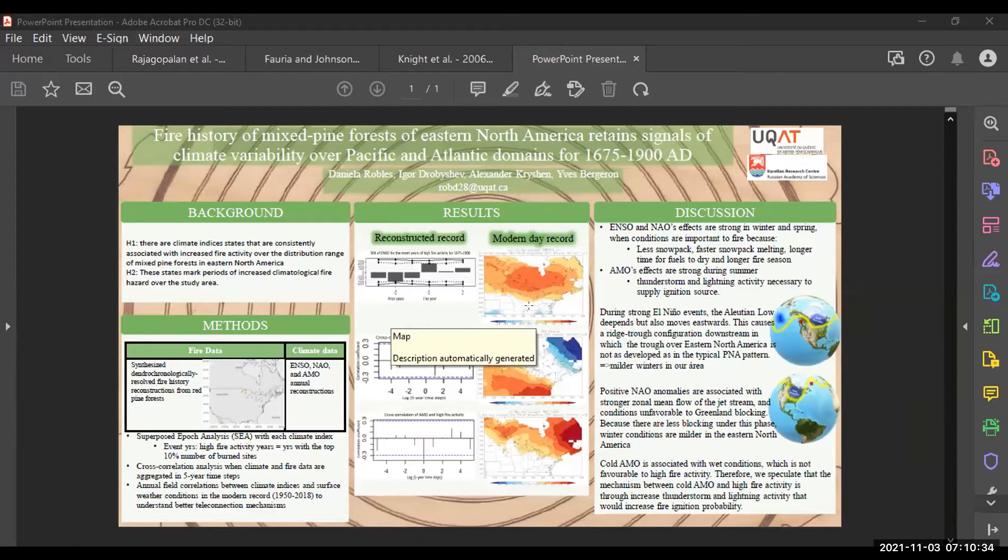So these reconstructions, these data sets that I used come from published papers. I also use some unpublished data sets from Igor Drobyshev. But in this part, it's usually only frequency data that is recovered, as opposed to spatial data. So my high fire activity years are the years when we have the highest number of sites burned in synchrony.